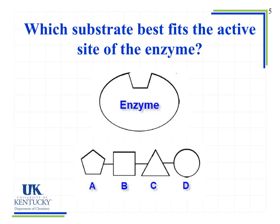Now that we know the function of a catalyst, we need to figure out why certain molecules interact with specific enzymes. Which substrate — A, B, C, or D — is going to best fit the active site of the enzyme? The answer is A, because its shape matches the shape of the active site. In that active site, side chains protrude from the enzyme's amino acids, and those side chains have to interact with compatible partners — a polar side chain won't interact with a non-polar side chain.